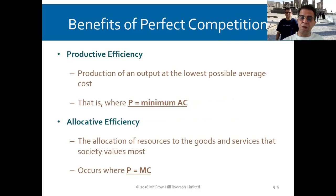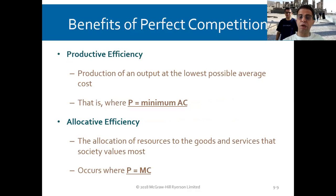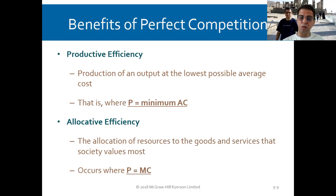The benefits of perfect competition include productive efficiency — the production of output at the lowest possible average cost, which is where price equals the minimum average cost, as seen in the previous graph. We also have allocative efficiency, which is the allocation of resources to the goods and services that society values most. This occurs where price equals marginal cost. The best situation is where price equals the minimum average cost, which equals the marginal cost.